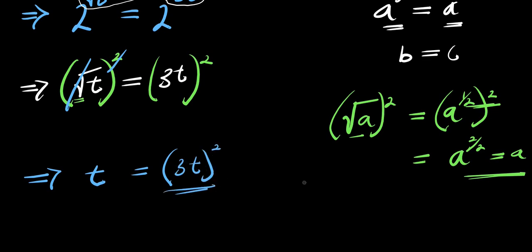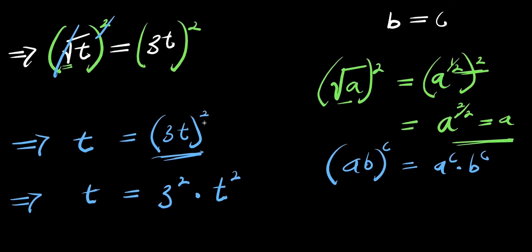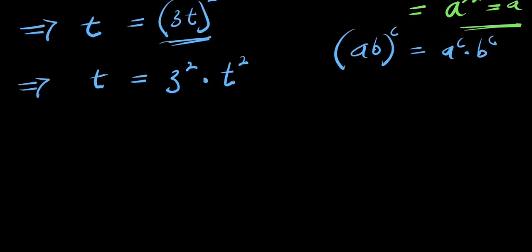Now considering this, if you have a times b raised to the power of c, this equals a to the power of c times b to the power of c. We apply that here. That means we are simply going to have t equals 3 to the power of 2 times t to the power of 2, that is 9 times t squared.